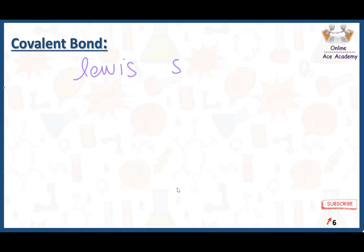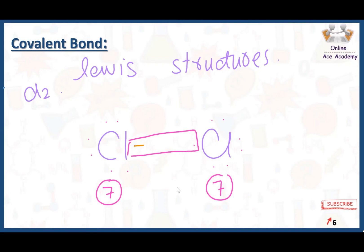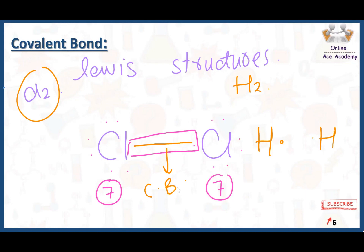Lewis structures are also very important in covalent bonds. For example, we have Cl₂ — here we have one chlorine and another chlorine. Each chlorine has seven electrons in the outermost shell. They will simply share these two electrons between them to make a covalent bond. Similarly for hydrogen — H₂ — hydrogen only has one electron in the outermost shell. After sharing these two electrons, hydrogen forms a bond which is called a covalent bond.